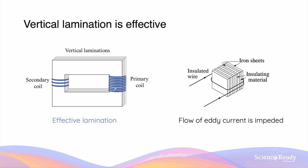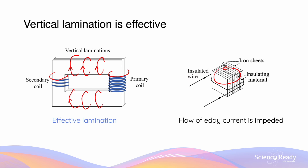It is important to understand that lamination involves cutting the iron core in a very specific orientation, called vertical lamination. The eddy currents induced in the iron core flow in a circular direction — on the top and bottom they flow one way, and on the left and right where the primary and secondary coils are, they flow another way. By cutting the iron core into vertical slices, the eddy current can no longer flow in its original path and must instead flow inside each thin slice, which greatly reduces the total magnitude of the eddy current and minimizes power loss.